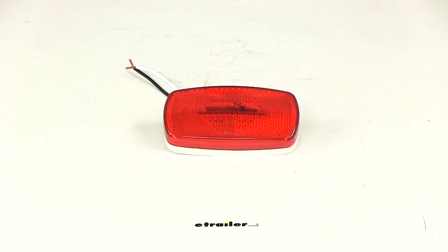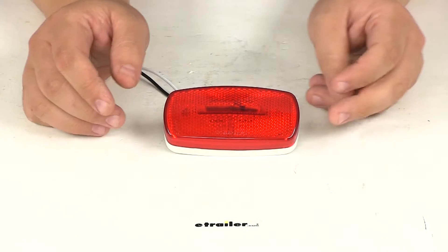Today we're going to be taking a look at part number MCL32RB. This is the Optronics Trailer Clearance or Side Marker Light with Reflex Reflector.